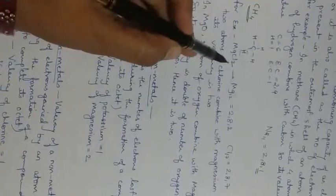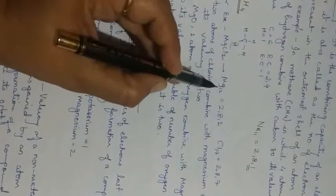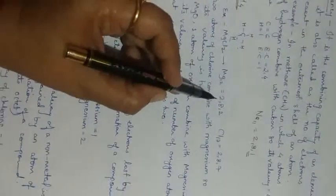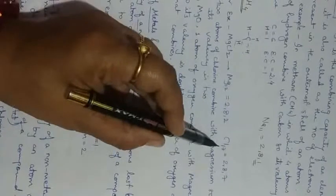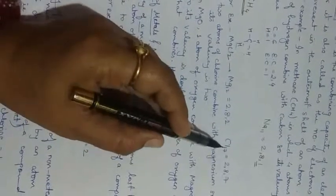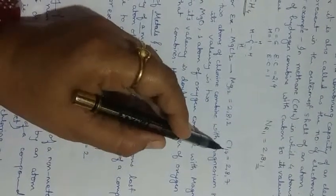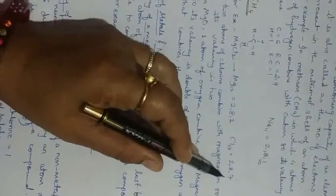Because of this, the valency of any element is decided. Now let us check one more example: magnesium chloride. In magnesium chloride, the atomic number of magnesium is 12, and its EC will become 2,8,2. Chlorine has atomic number 17, and its EC will become 2,8,7.